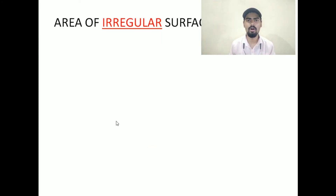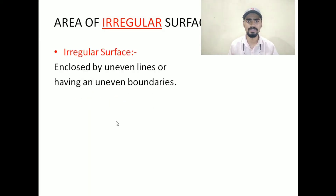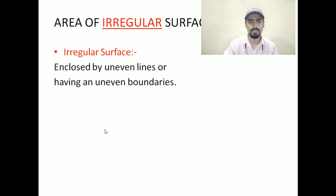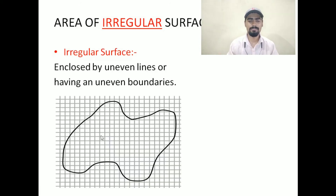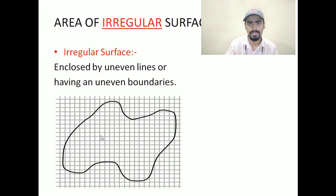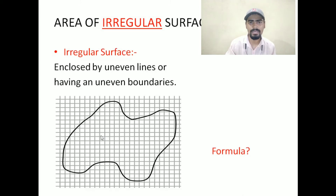Now, the next topic is the area of irregular surfaces. What is an irregular surface? Irregular surfaces are those enclosed by uneven lines or having uneven boundaries, while regular surfaces have smooth boundaries. While in the irregular one, we are having uneven lines or uneven boundaries. So, are we having any formula to calculate the area of an irregular surface? No. If no, then how are we going to find out the area of an irregular surface?